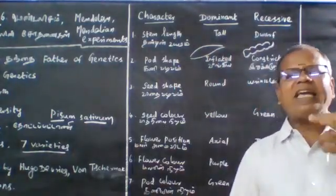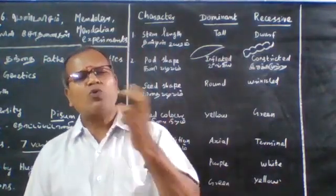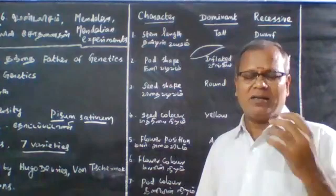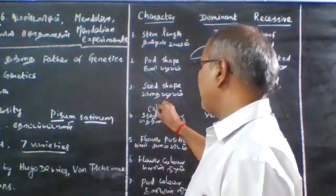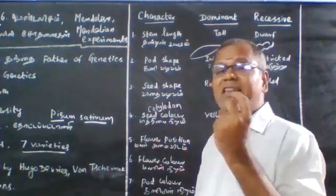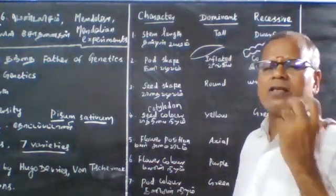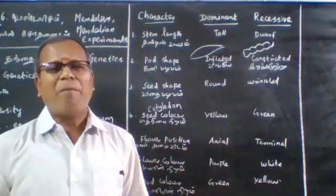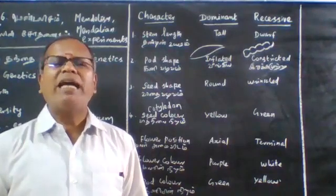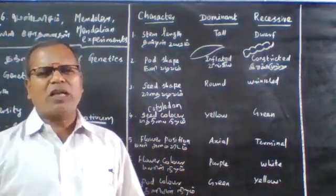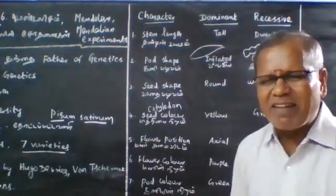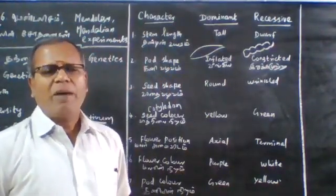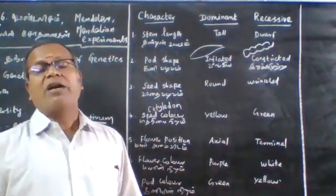Seed shape: Round is dominant. Seed color — cotyledon color: Yellow is dominant over green. Flower position: Axillary flower is dominant over terminal. Flower color: Purple is dominant over white. Pod color: Green is dominant over yellow.